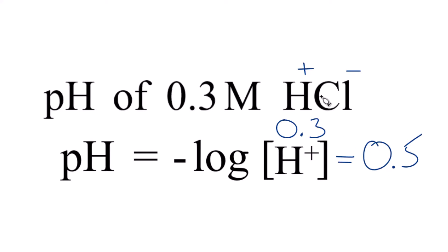That makes sense because HCl is a strong acid. Acids are below seven on the pH scale. So that's how you do it.